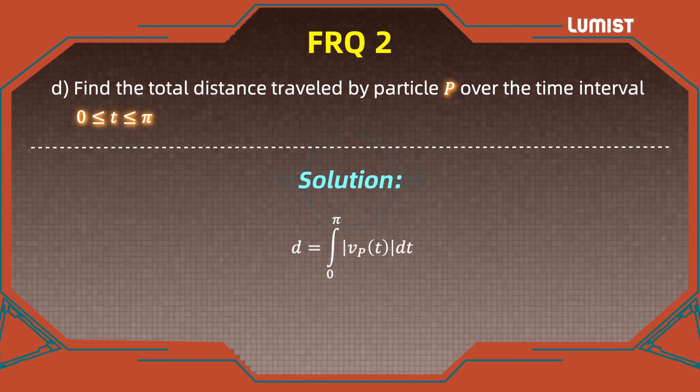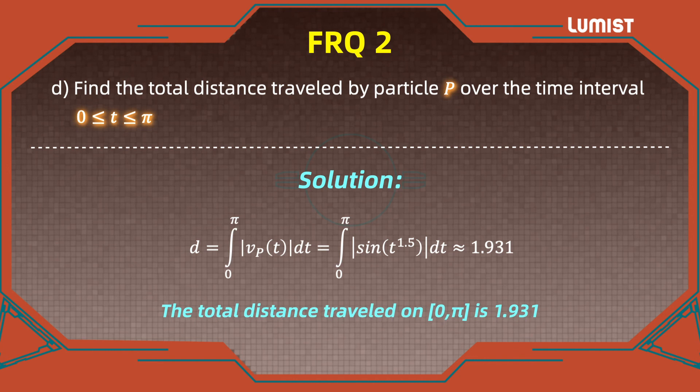We just have to plug in the values and find what this is. So this is the integral from 0 to π of the absolute values of sine of t to the 1.5 dt. After plugging in the values, we obtain approximately 1.931. This is the total distance traveled. We can conclude that the total distance traveled on that interval is 1.931. This is the end of part D.